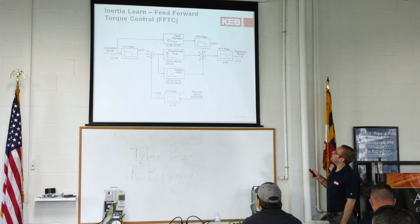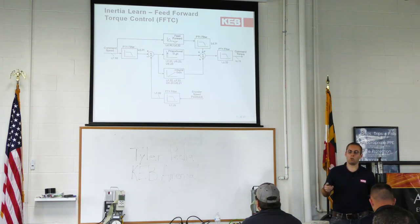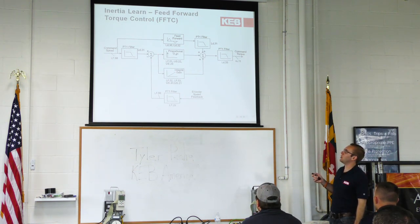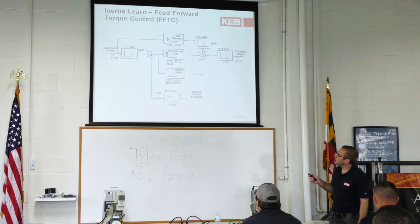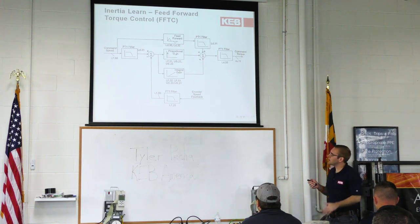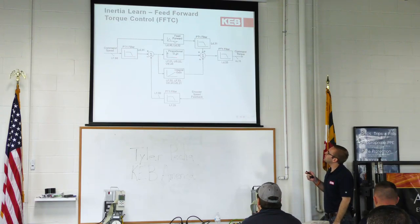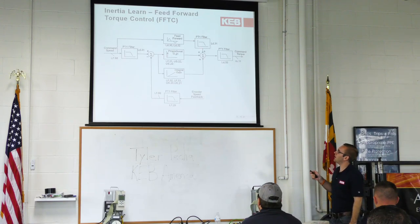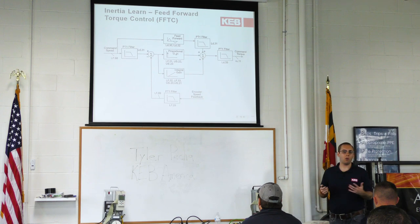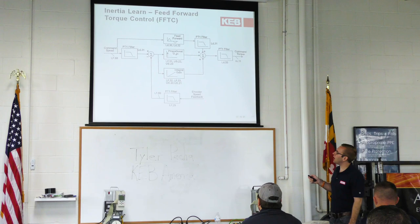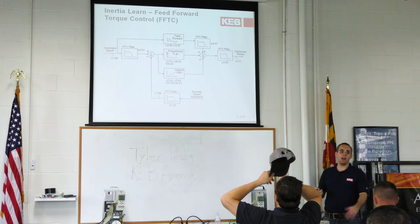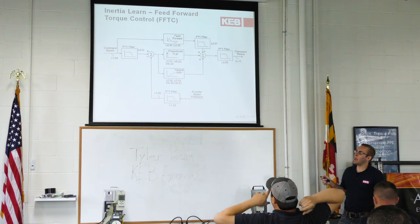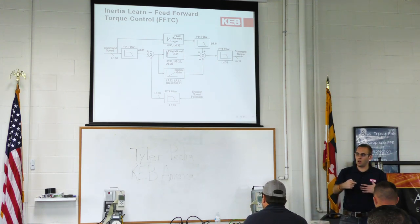The drive tries to compensate, sends out what it thinks it needs, then looks back — now maybe we're at 45 feet per minute, so we only have a 5 ft/min difference. That gets thrown back into the loop, and that's where the integral gain starts to come in because more time is involved, helping you settle in. This loop is happening constantly on a microsecond level. Without feedforward active, you're strictly relying on feedback from the encoder, and your response is only as good as that feedback — there are delays because nothing is instant.